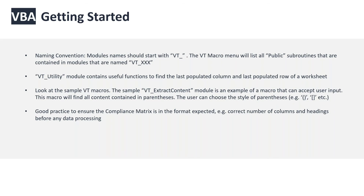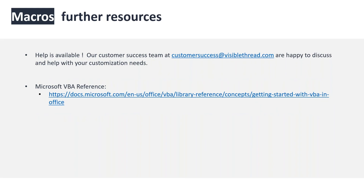To get started, look at the VT Extract Content example macro — a good starting point for using a user interface. A good practice when writing code is to make sure the compliance matrix is in the format you expect — correct number of columns, right headings — and that nobody has run another macro that removed content your macro depends on. Finally, our customer success team is available at customersuccess@visiblethread.com to discuss any customization needs. There's also a reference in the deck to Microsoft VBA documentation to help you get started writing macro code.